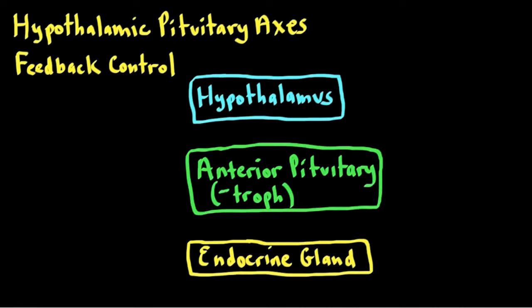After watching this lecture, you should be able to describe the hypothalamic-pituitary axes and apply feedback control principles to predict levels of hormones when there's a disturbance in a given feedback loop.